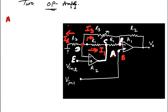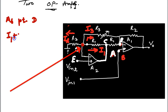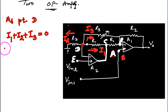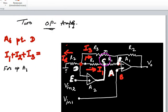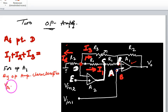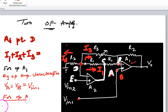Applying KCL at node B: all currents i1, i2, and i3 are flowing outward, so i1 + i2 + i3 = 0. By the ideal op-amp characteristic, the virtual voltage at point B equals the voltage at point A, so Vb = Va = Vin1. Similarly, for op-amp A2, the voltage at point D equals the voltage at point E, so Vd = Ve = Vin2.